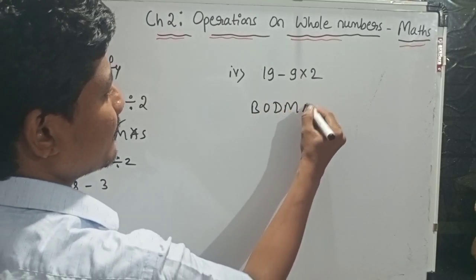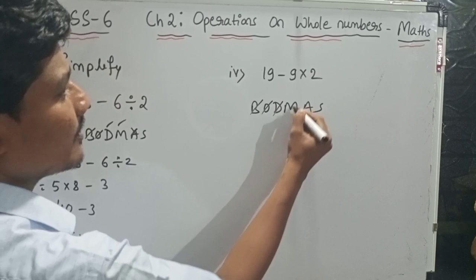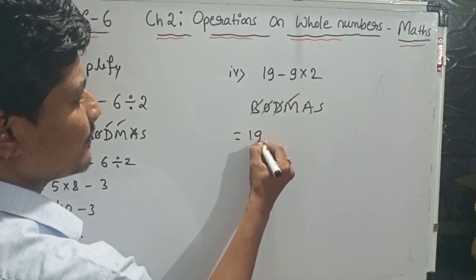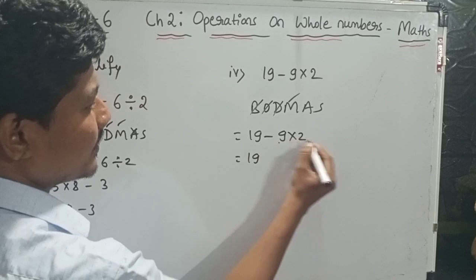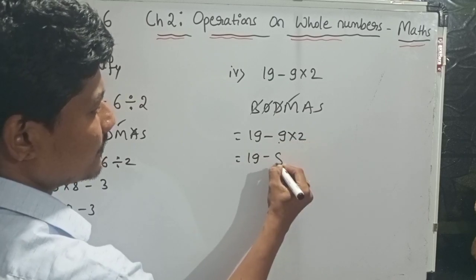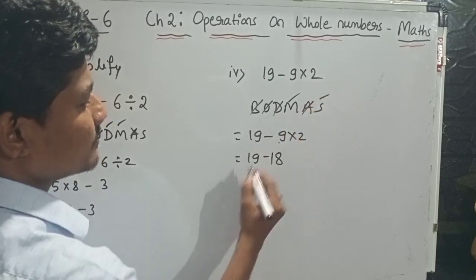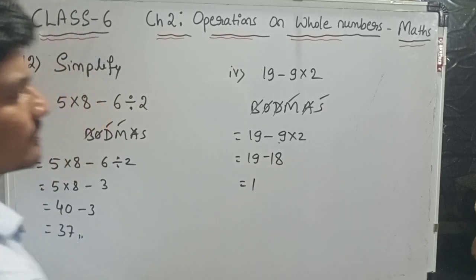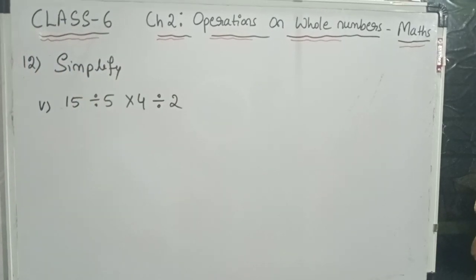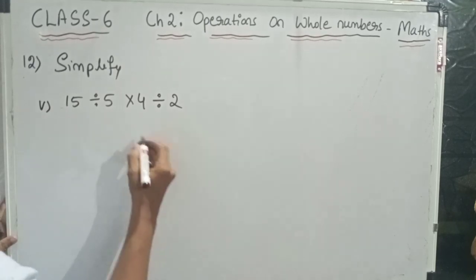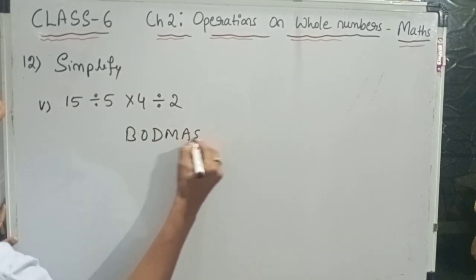Again using the BODMAS rule. Bracket, Of, Division are not there. Multiplication is there: 9 into 2 is 18. So the expression becomes 19 minus 18. Subtraction: 19 minus 18 is 1. So 1 is the answer.